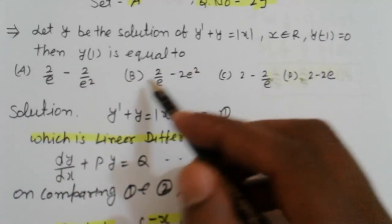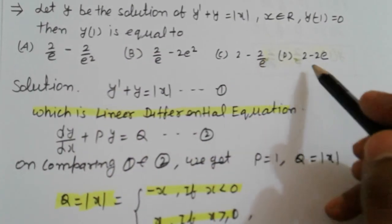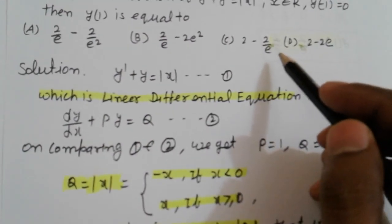Then Y(1) is equal to: first option, second option, third option, and fourth option. Four options are given: A, B, C, D.